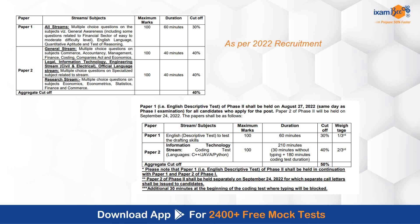Moving ahead with the exam pattern as per July 2022 recruitment — in phase 1 there are two papers. Paper 1 is QREGA: Quant, Reasoning, English, and GA, which is common for all streams. Paper 2 is IT stream specific, with 50 questions of 100 marks. The cutoff is 40% — so 40 marks. Paper 1 has 80 questions worth 100 marks, with 20 questions in each section. Sectional cutoff is not applicable. You need 30 marks in paper 1, 40 in paper 2 — overall aggregate cutoff is 40% out of 200, meaning 80 marks to clear phase 1. Whether you score 90, 100, or 150, it doesn't matter — these marks are not added to the final merit list. Target 100 as a safe score.